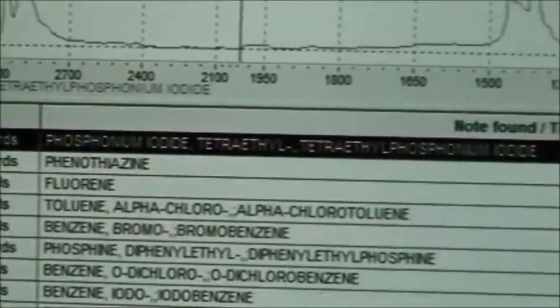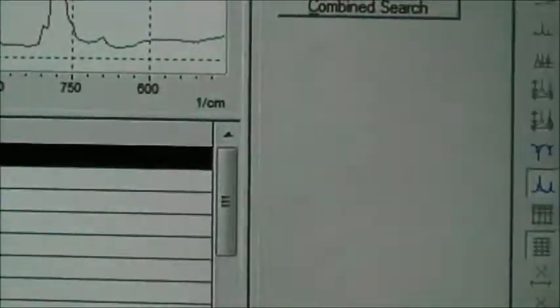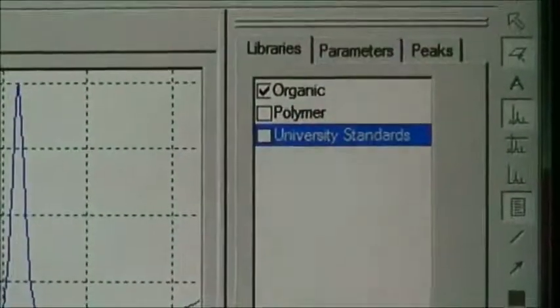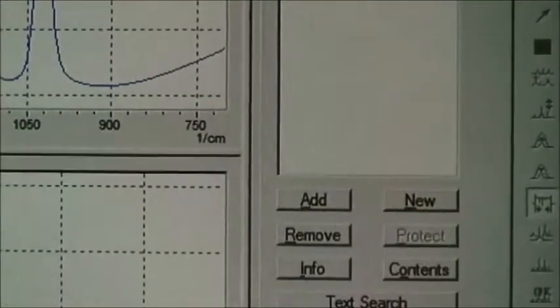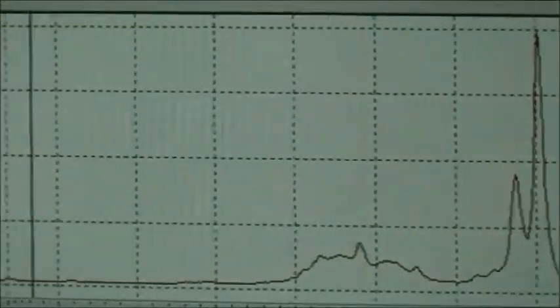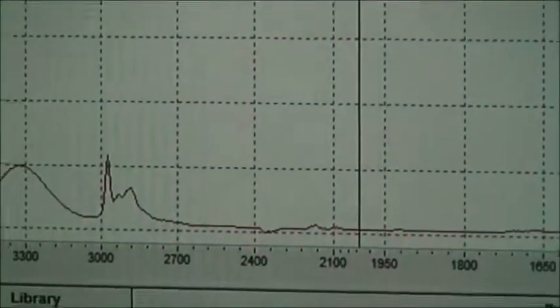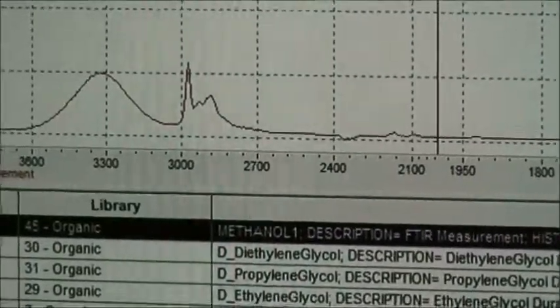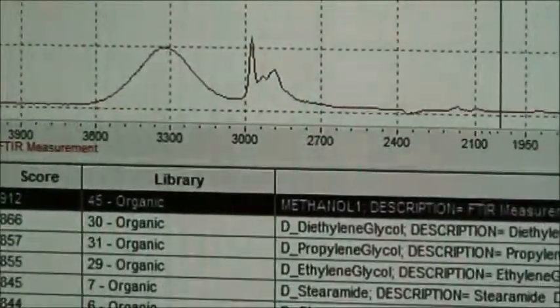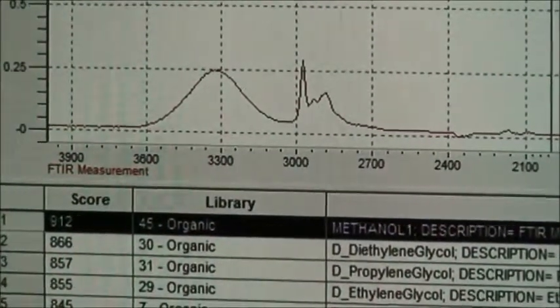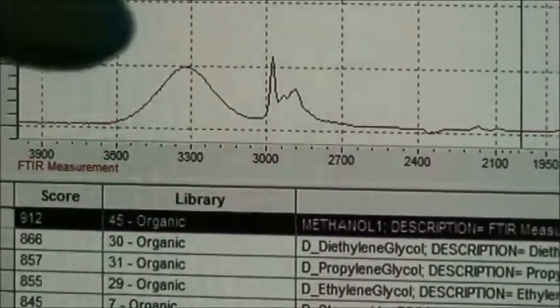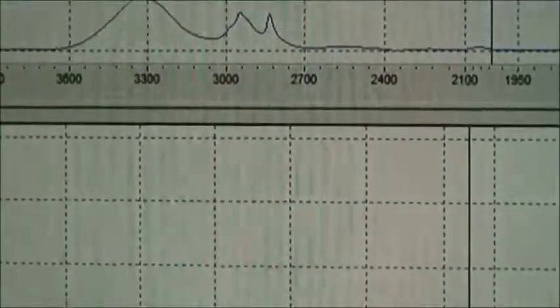So I'm going to click organic libraries. Let's do a spectrum search. Okay. So what did we find this time? The first one on our list with the score of 912 out of 1,000 is methanol. So it shows you our methanol and then it shows you their methanol where they compare the structures.